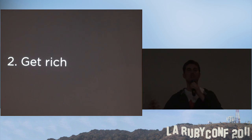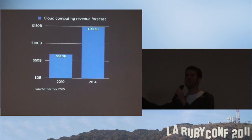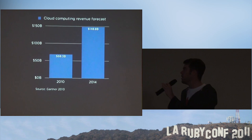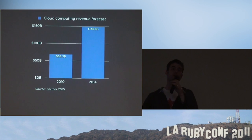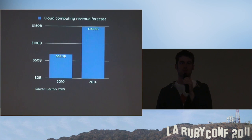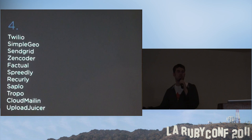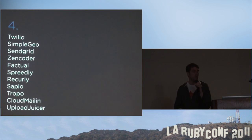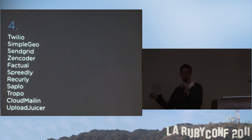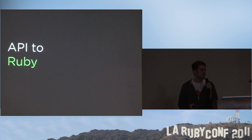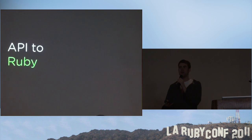The second thing you can get by building an awesome API is wealth — or maybe less crassly, the ability to work for yourself, control your own destiny, do something powerful and cool. This is a big trend in technology right now. Cloud computing spending is going to more than double in the next four years. We're at an early stage of more and more infrastructure being done this way. There are literally hundreds of startups approaching technology this way, and there's plenty of space — this is still early.